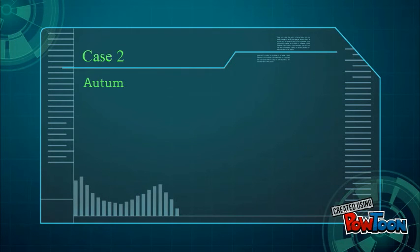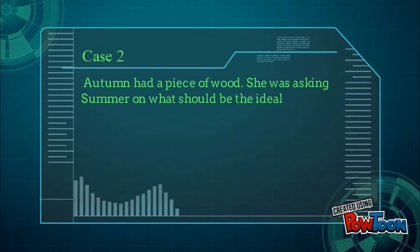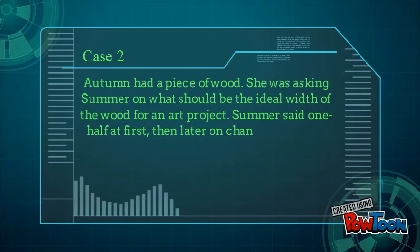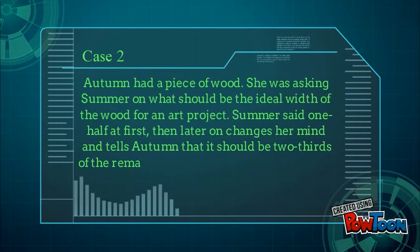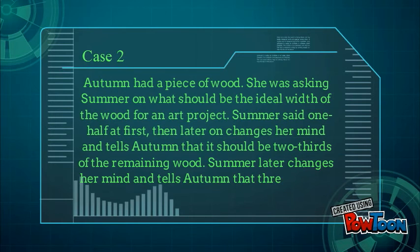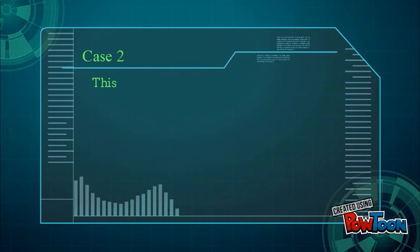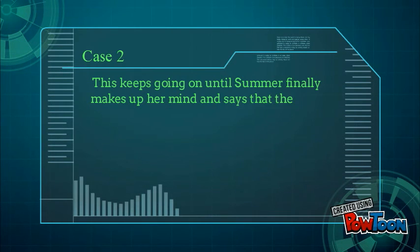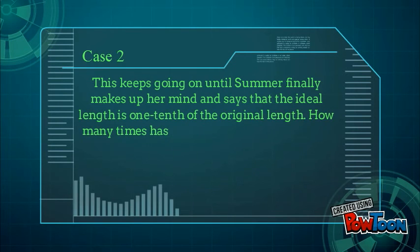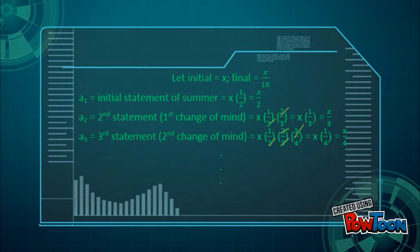Autumn had a piece of wood and asked Summer what should be the ideal width for an art project. Summer said one-half at first, then changed her mind to two-thirds of the remaining wood, then three-fourths of the remaining. This keeps going on until Summer finally says the ideal length is one-tenth of the original length. How many times has Summer changed her mind? Let the initial length be X and the final length X/10.